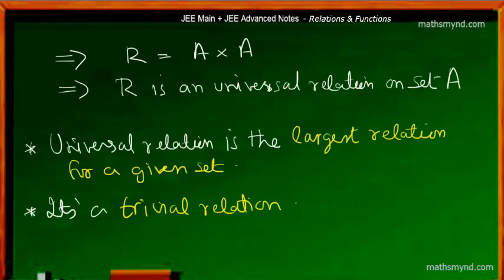That is, the relation is A times A, which implies that we are dealing with a universal relation on that particular given set.